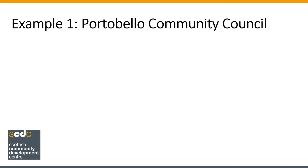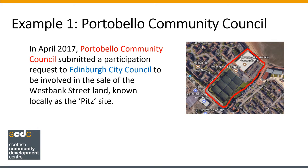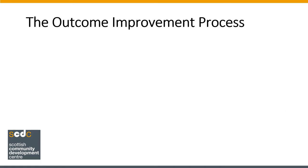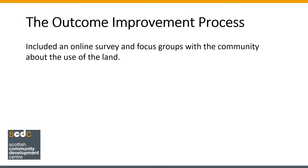Our first example is from Portobello Community Council, who in April 2017 submitted a participation request to Edinburgh City Council to be involved in the sale of the West Bank Street land, known locally as the pits site. At the time the site was being used for sport facilities. The request was agreed to in June 2017, which would allow further engagement with the community before the preferred bidder was chosen. The resulting outcome improvement process included an online survey and focus groups with the community about the use of the land.